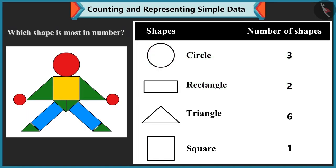Now tell me which shape is most in number? There are six triangles over here. So this means triangles are most. There is only one square. So square shape is least in number.